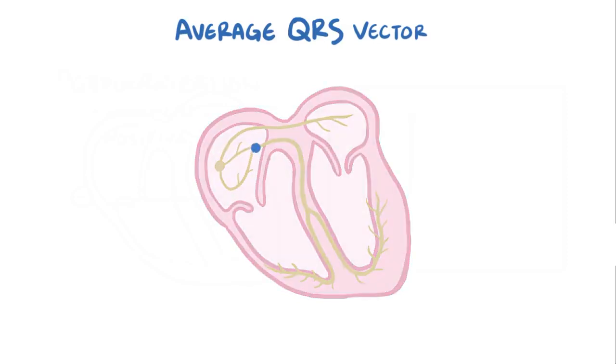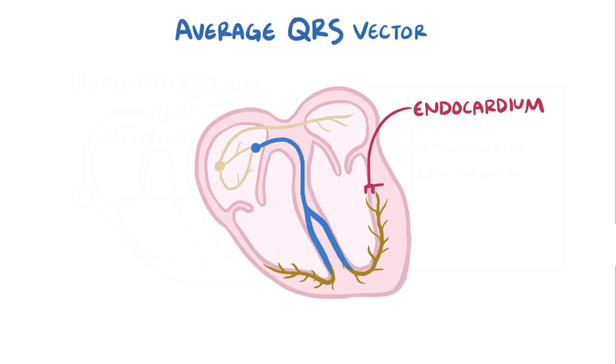After the depolarization wave arrives at the AV node, it travels down the interventricular septum and starts depolarizing the ventricles. The purkinje fibers sit just below the endocardium, which is the innermost layer of the heart. After the endocardium is the myocardium, the cardiac muscle cells, and then finally there's the epicardium, which is the outer layer.